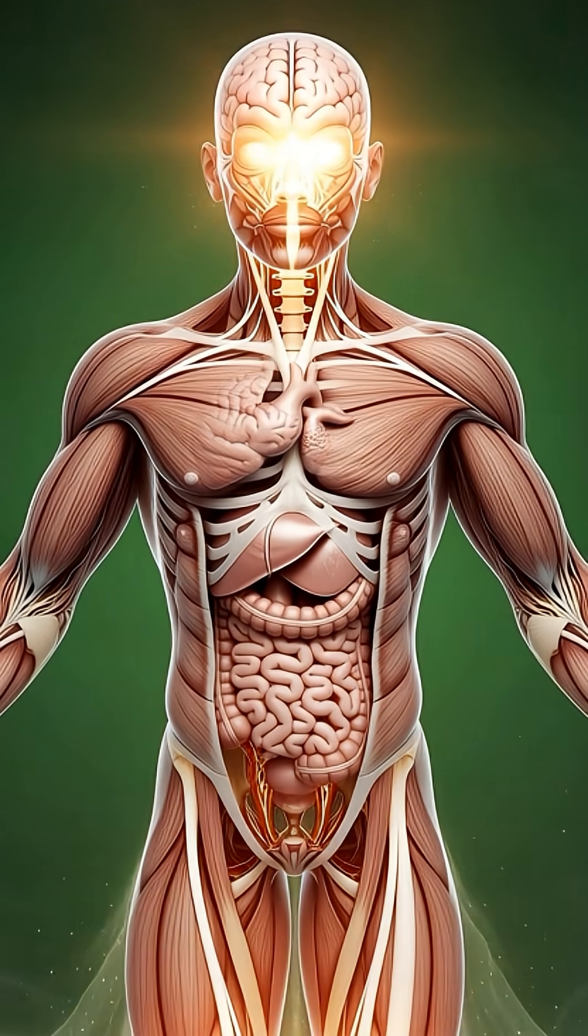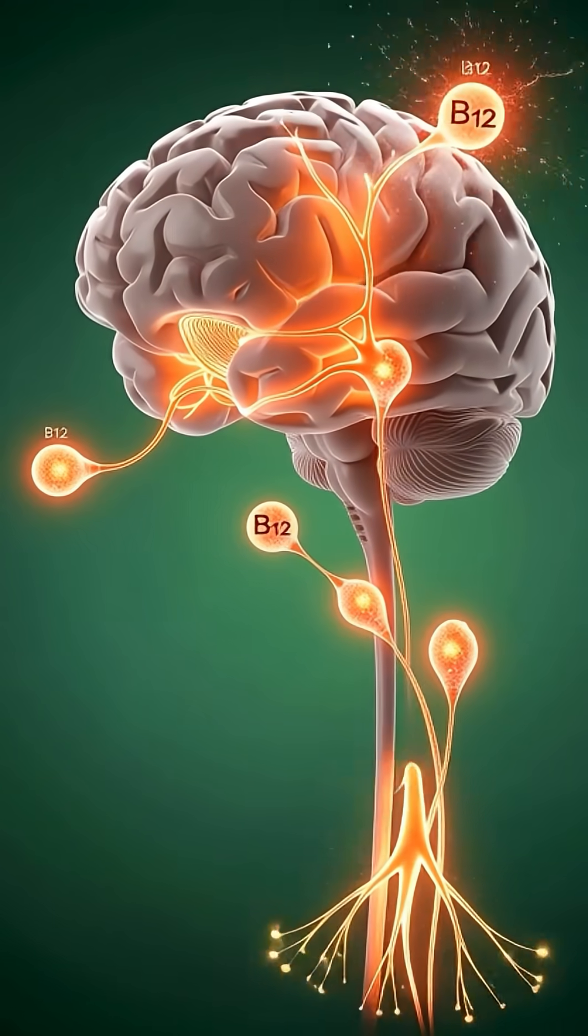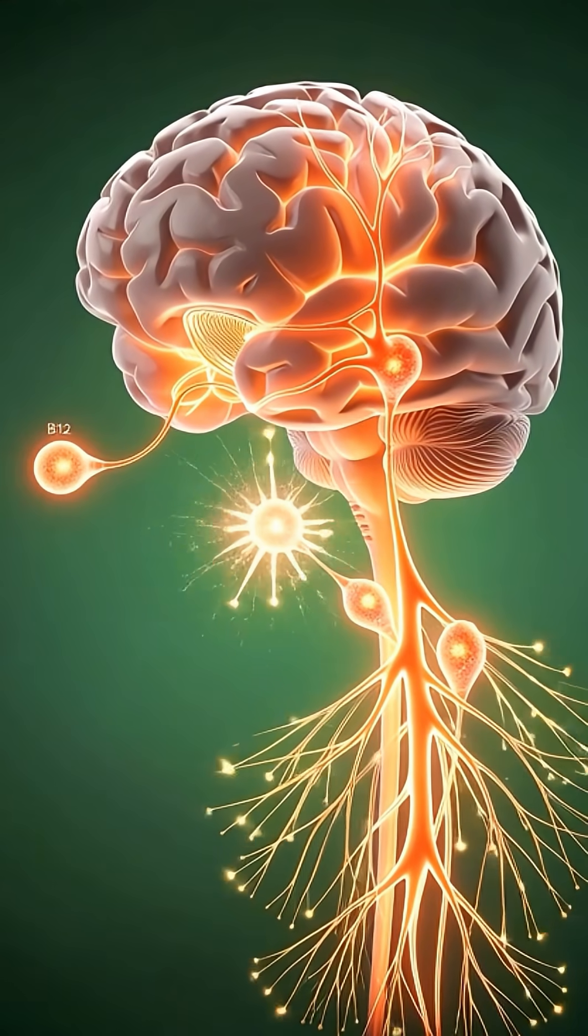Milk travels down to our stomach. Gastric juices mix with it, breaking it down. It enters the small intestine.